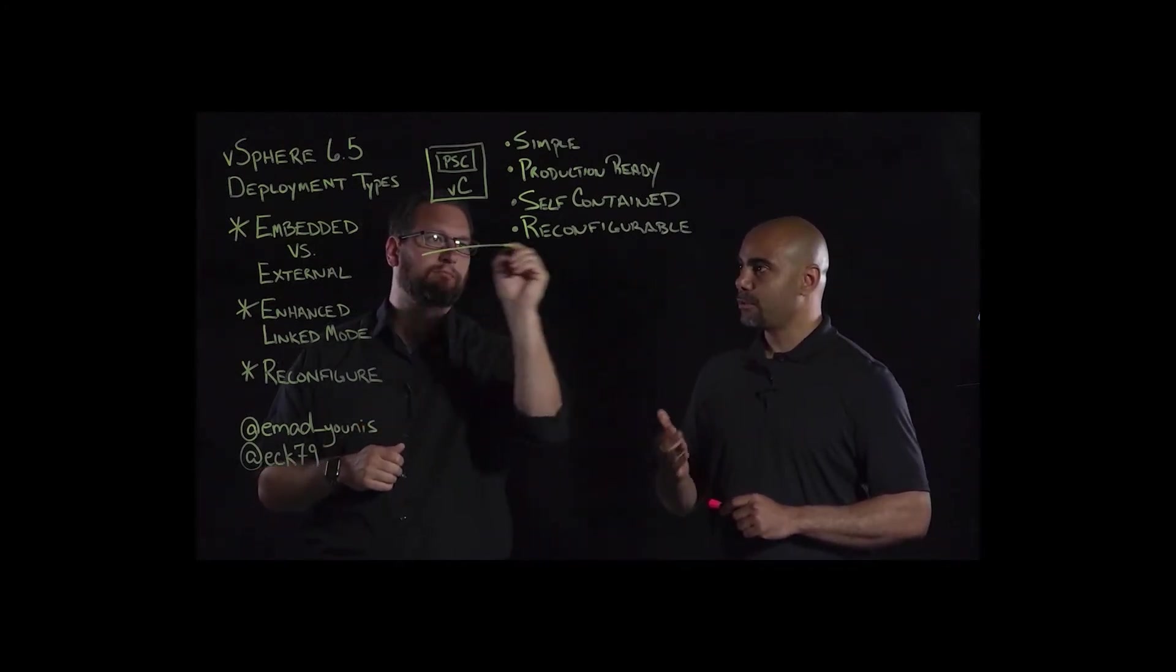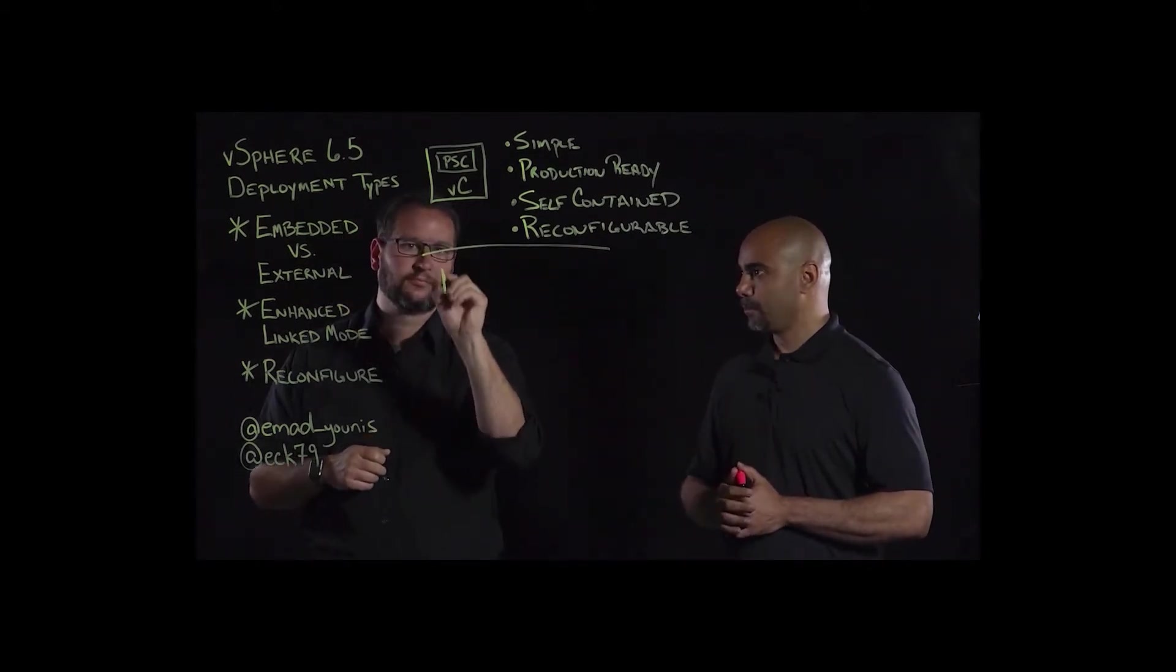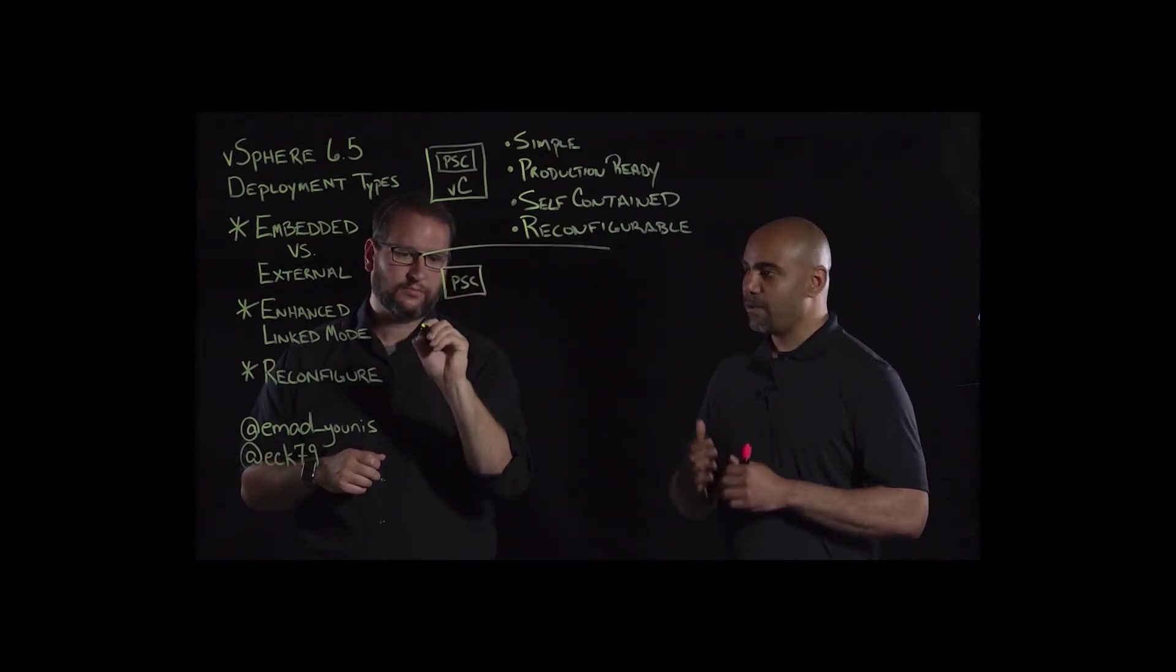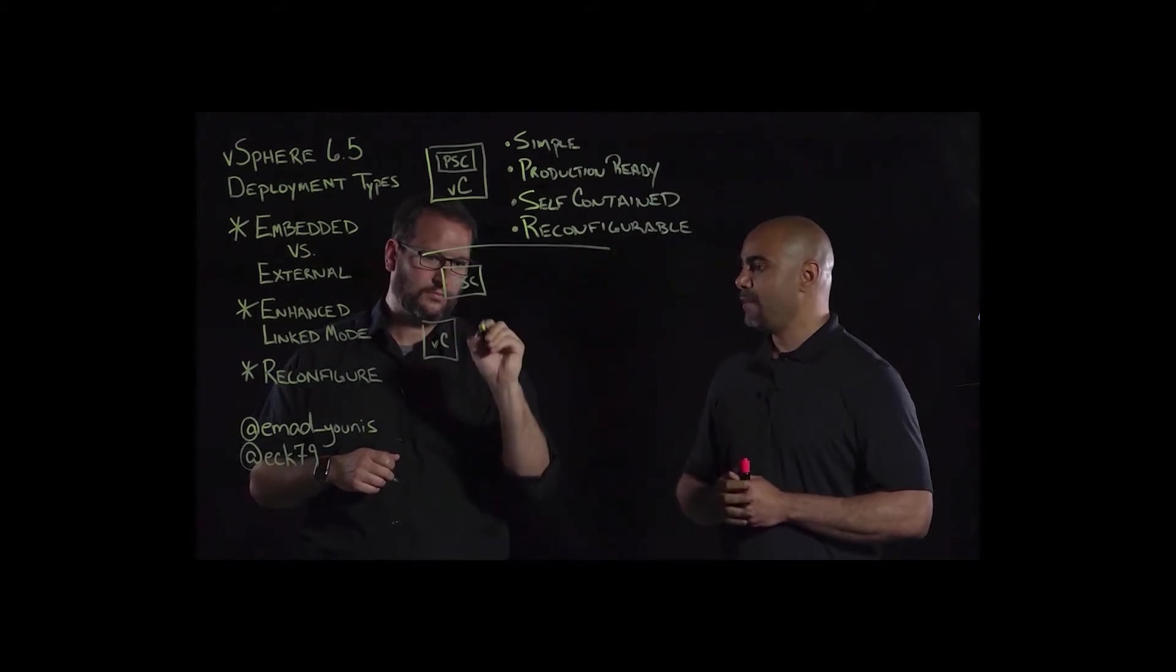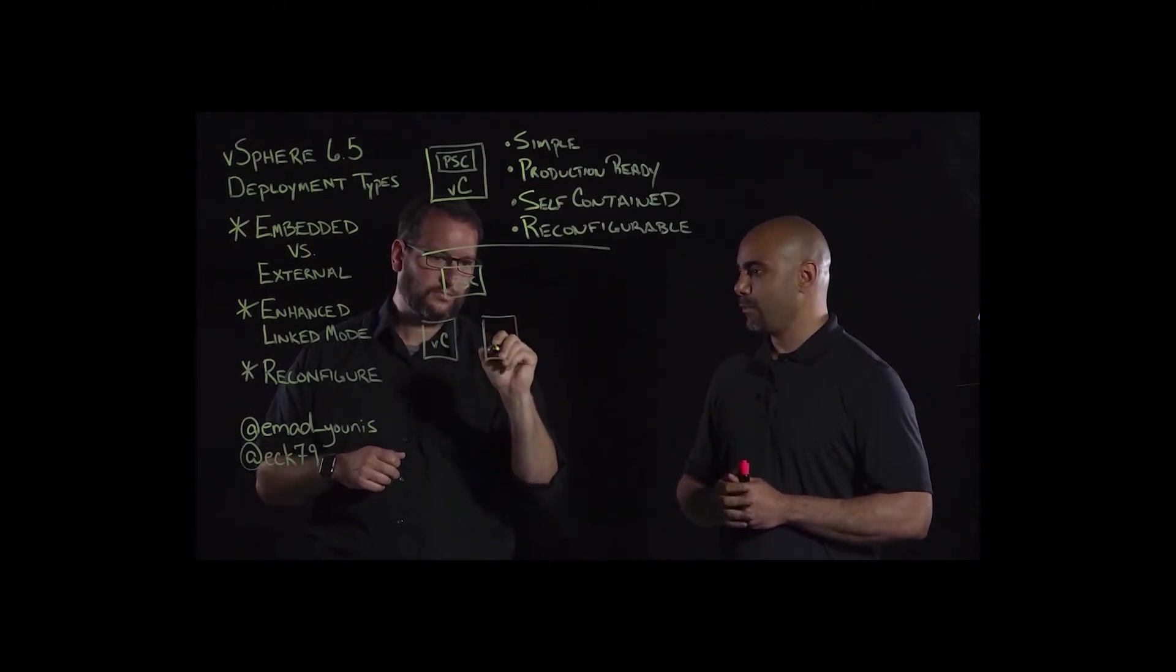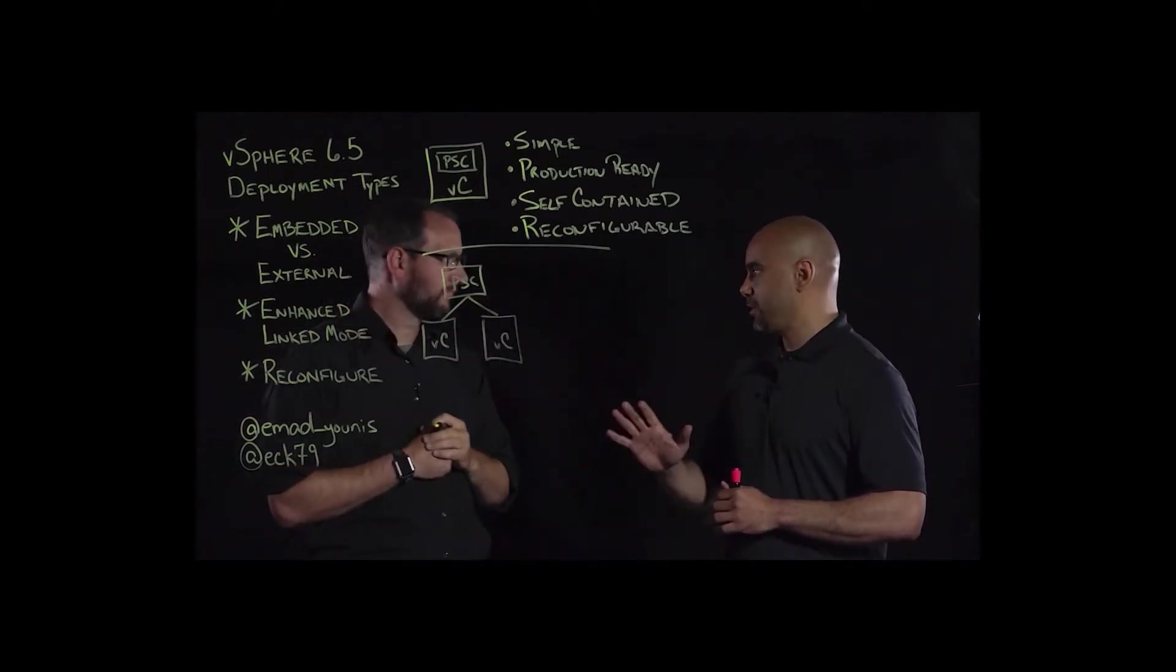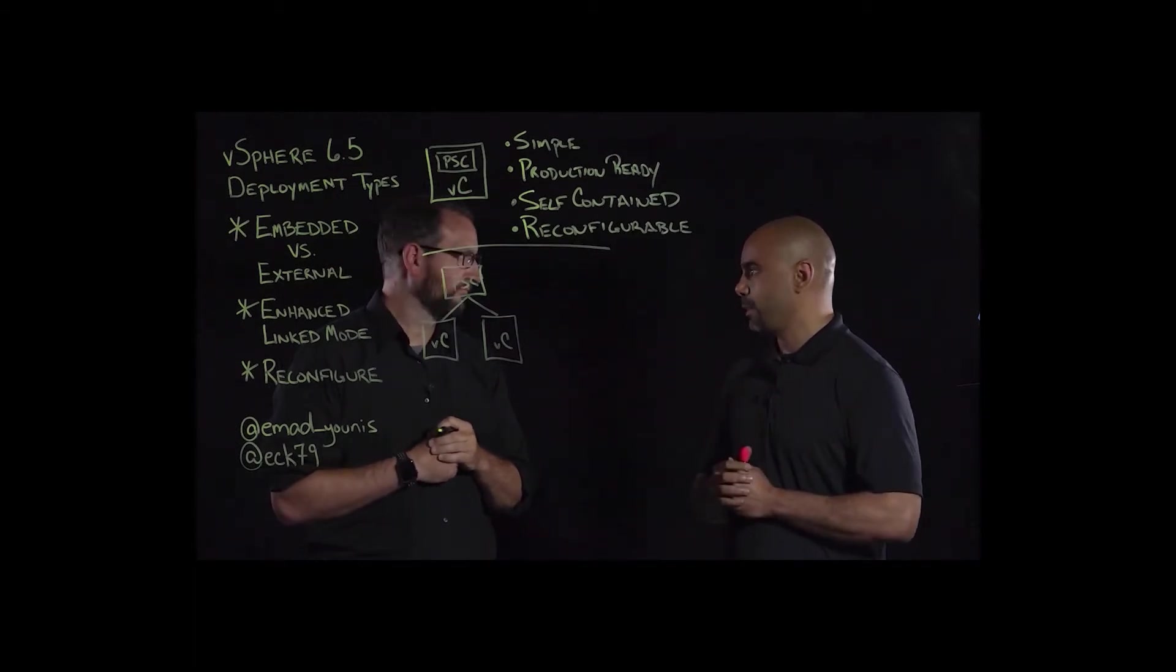So, now let's talk about the next deployment model, which is the external deployment model. In the external deployment model, we are now going to have the platform services controller on its own virtual machine and vCenter server on its own virtual machine. Now, the key benefit to this deployment model is having enhanced link mode. That should be your first decision point. Absolutely.